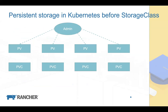Persistent storage in Kubernetes has evolved since its inception. One major event was the introduction of Storage Class, around Kubernetes 1.5 or 1.6. Before that, the model was that the storage admin had to allocate Persistent Volumes first.